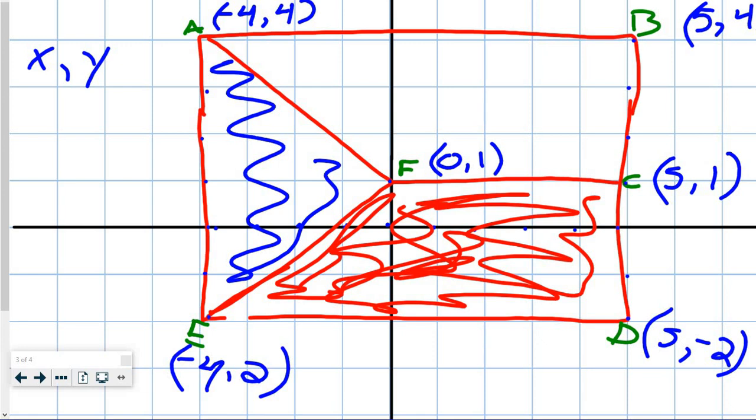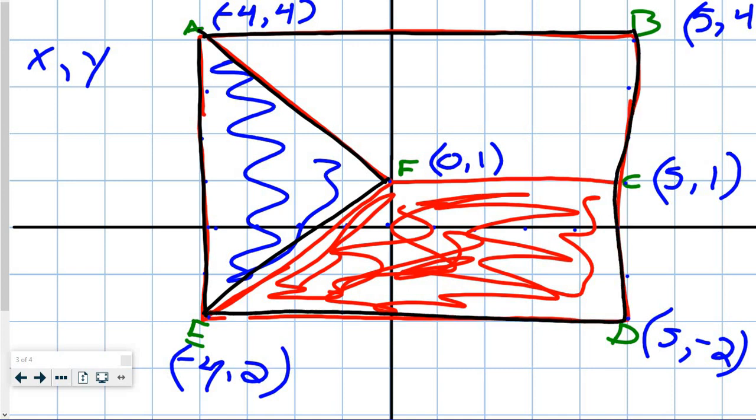So when we tell somebody how to draw it, we can give them the coordinates and say connect A to F, connect E to F, connect A to E, connect A to B, connect B to C, C to D, and D to E, as well as F to C. So now we can have A to F, F to E, A to F, A to B, B to C, C to D, D to E, and then F to C. And now we have the Czech flag.